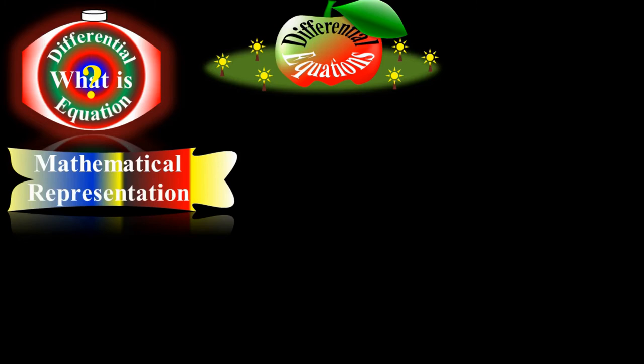We have a simple equation dy/dx plus x-squared times y equals zero. It is a differential equation. According to the first definition from the previous lecture, an equation having a function and one or more of its derivatives is a differential equation. We have a derivative term dy/dx here, and therefore it is a differential equation.